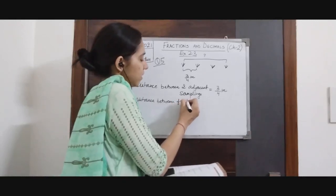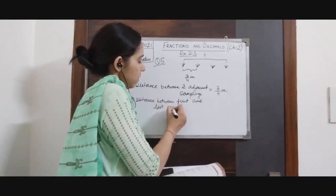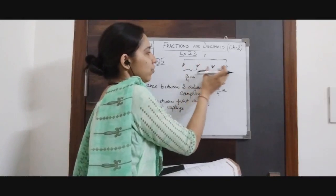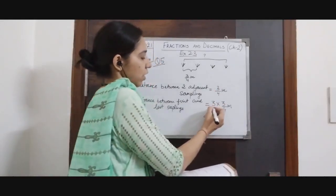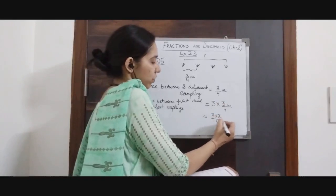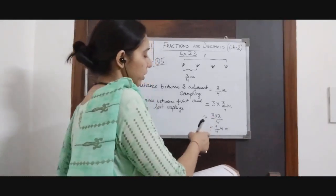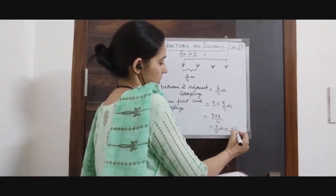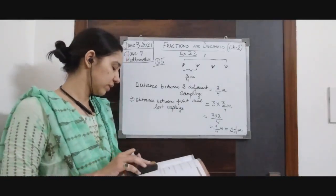Distance between first and last sapling — we have 4 saplings, so this distance is thrice of the adjacent distance, as you can clearly see. Now we will multiply this whole number with this fraction: 3 × 3/4 = 9/4 metres. Since it is an improper fraction we convert it into mixed fraction, giving 2 and 1/4 metres as the answer.